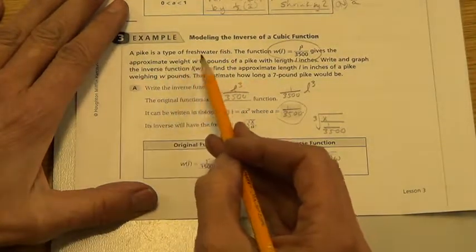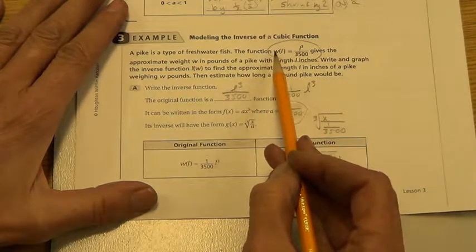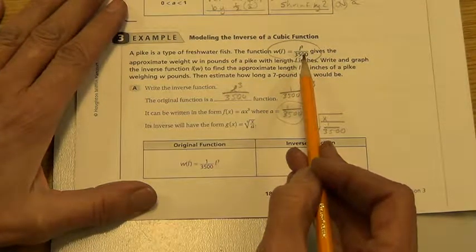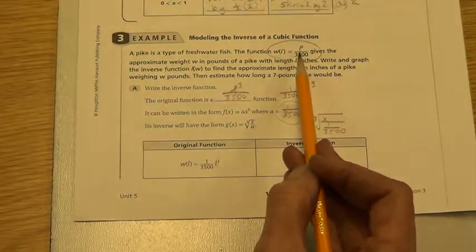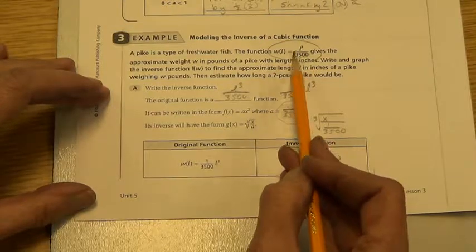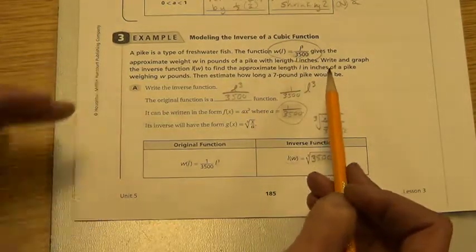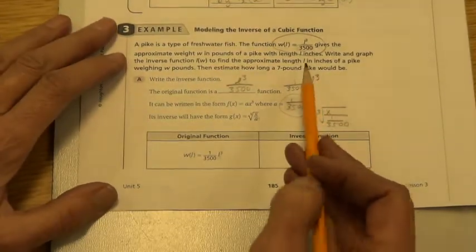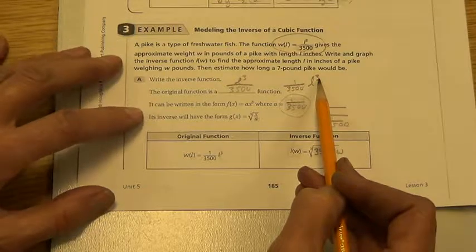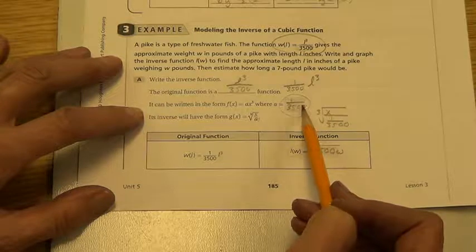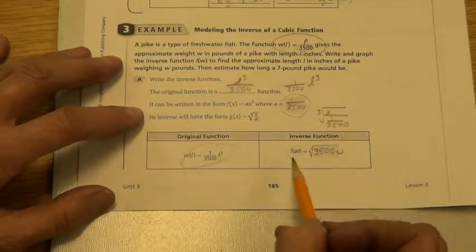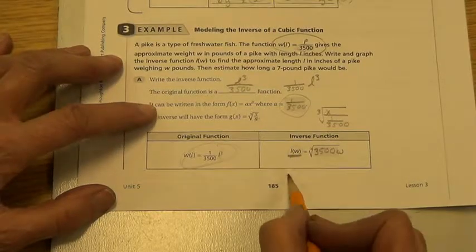Here's a real world problem that will help with this. We have a pike, a freshwater fish, and this fisherman has developed a function, w of l equals l cubed over 3500. He's just found that this number, as a non-variable number, just a solid number, if you take the length and you cube it, and then you divide by that 3500, you can estimate the weight in pounds. He's just gathered that information from doing a lot of this. So they want us to write the inverse function.